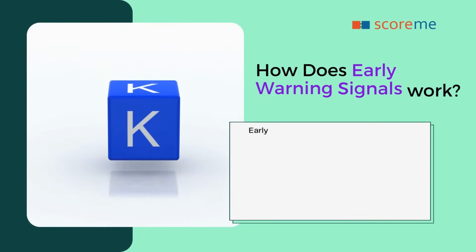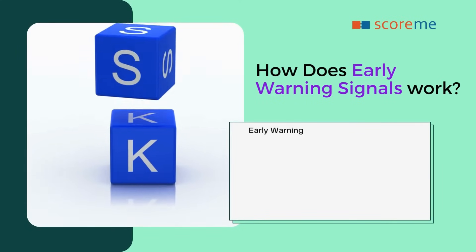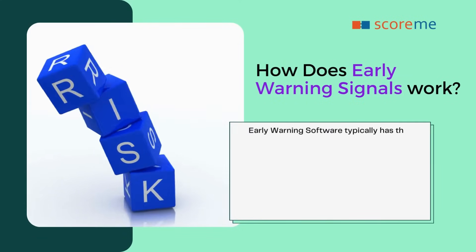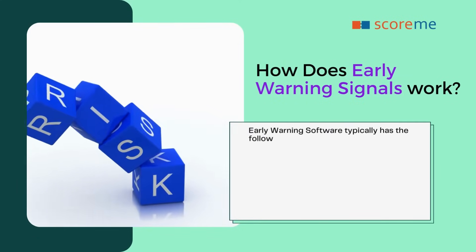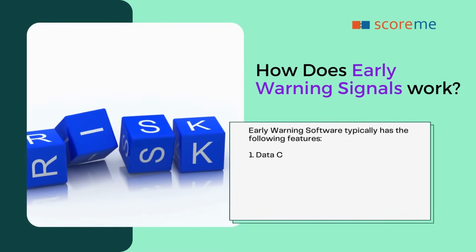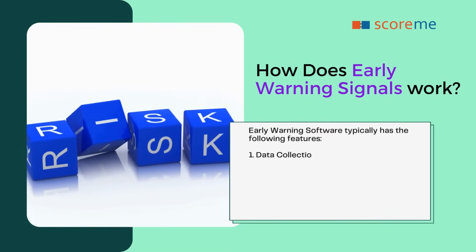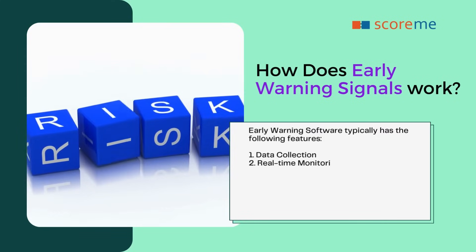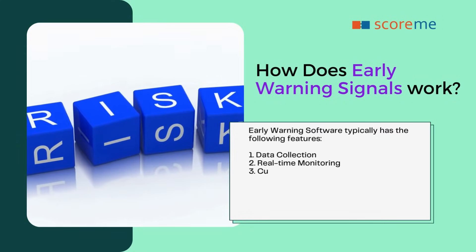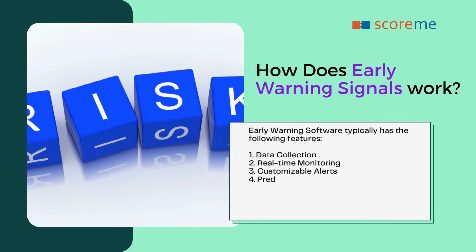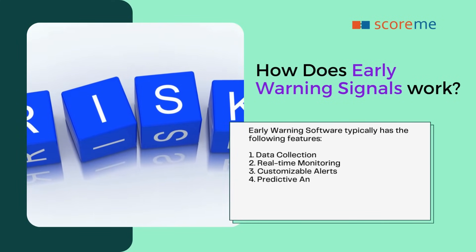How does early warning signals work? Early warning software typically has the following features: 1. Data collection, 2. Real-time monitoring, 3. Customizable alerts, 4. Predictive analytics.